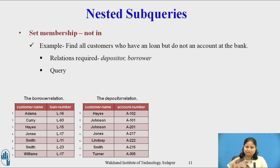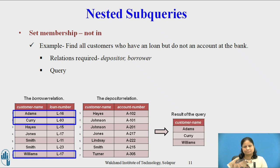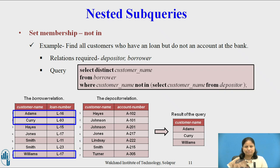Now consider the example: find all customers who have a loan but not an account at the bank. Here we use the set membership operator NOT IN. The relations required are depositor and borrower. Three customers — Adam, Curry, and Williams — have a loan at the bank but not an account. The query is: SELECT DISTINCT customer_name FROM borrower WHERE customer_name NOT IN (SELECT customer_name FROM depositor).